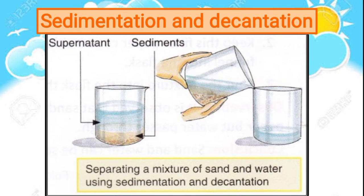Sedimentation and decantation is another method of purifying water. During sedimentation, the liquid is left undisturbed for some time, then the heavy insoluble solids settle down at the bottom — this process is called sedimentation. The upper clear liquid is then poured into another container without disturbing the insoluble solid — this process is called decantation. Mud and water can be separated by the sedimentation and decantation method.